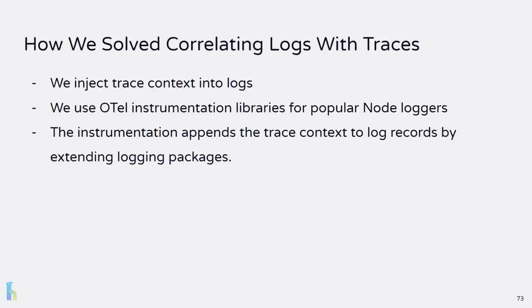Given we want our users to not have to change their existing logging system, we went with the option of injecting trace context into logs instead of using span events. To implement this, it turns out that OpenTelemetry has instrumentation libraries for popular Node.js loggers. As part of the auto-instrumentation code Haifa sets up for tracing, we also add instrumentation for logging libraries. These append the trace context directly to logs, so now we can correlate logs with traces by the execution context.